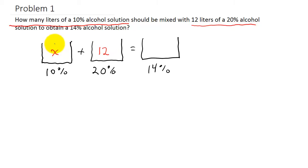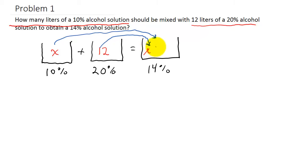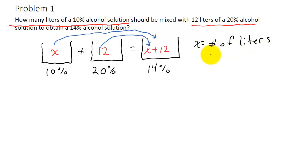We're going to take this bucket and dump it into the last one, and take this bucket and dump it into this one too. So the number of liters in the final bucket is X liters plus 12 liters, which is X plus 12. Our variable X is the number of liters of a 10% alcohol solution — that's what we're looking for.